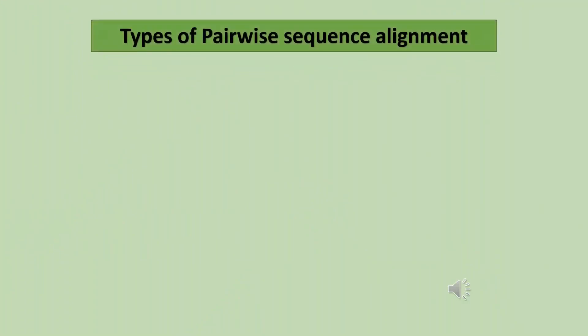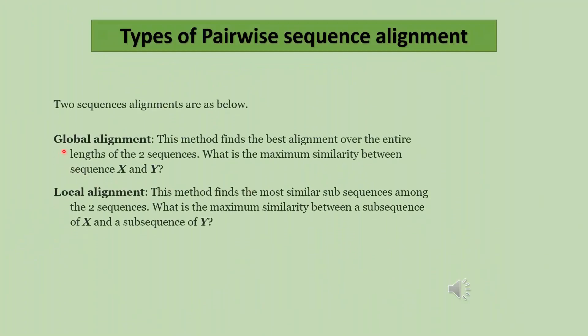Now, we can see types of pairwise alignments. 1. Global alignment. This method finds the best alignment, the most similar sub-sequences, among the two sequences. What is the maximum similarity between a sub-sequence of X and a sub-sequence of Y?